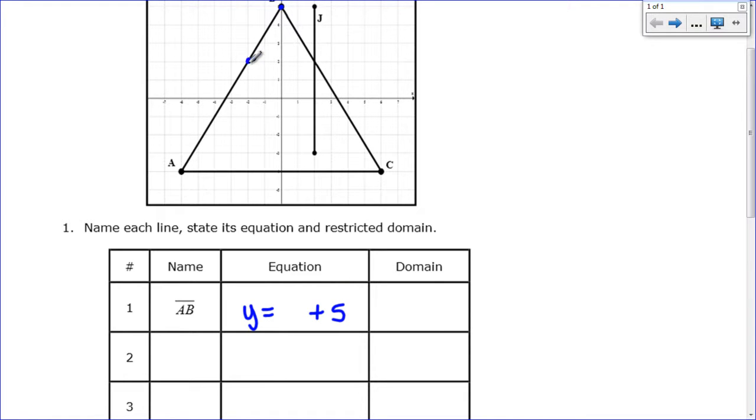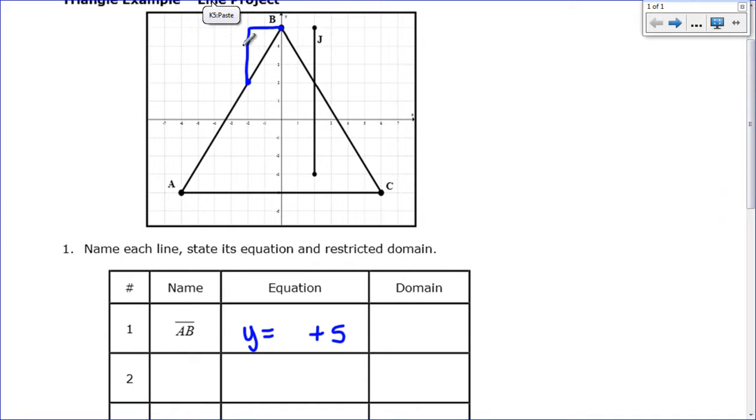And then if I find two pretty points on my graph I can do my rise over my run here. And so I can count and see that my slope is 3 over 2. And so my equation is going to be y = 3/2x + 5.